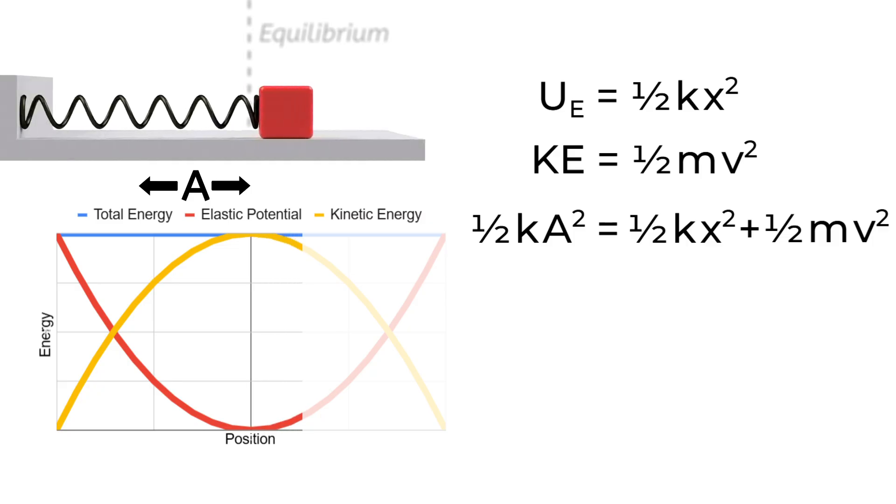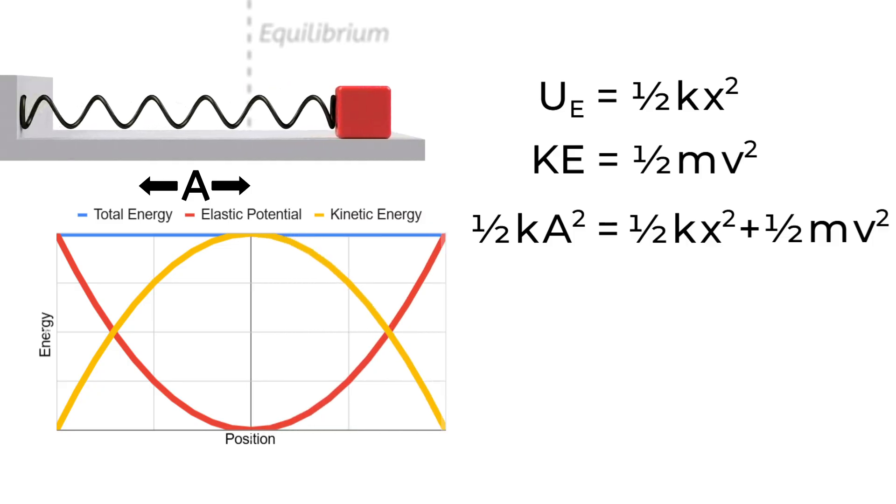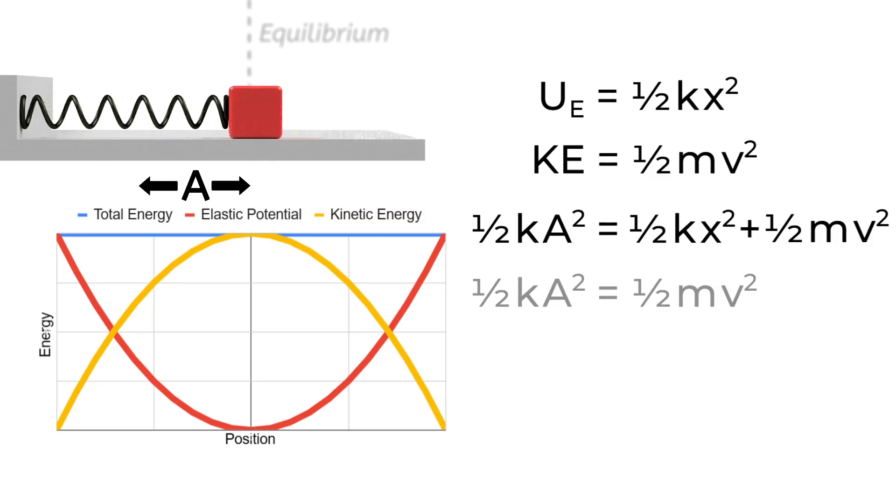Once it moves past equilibrium, the spring is going to start to slow down the block, taking kinetic energy away from the block and turning it back into elastic potential. But right at equilibrium, we can say that the energy that started in the spring, that's 1/2 ka², is going to have all turned into the kinetic energy of the block, 1/2 mv². So setting those two quantities equal to each other, we can rearrange them to get an expression for the maximum velocity of the block.